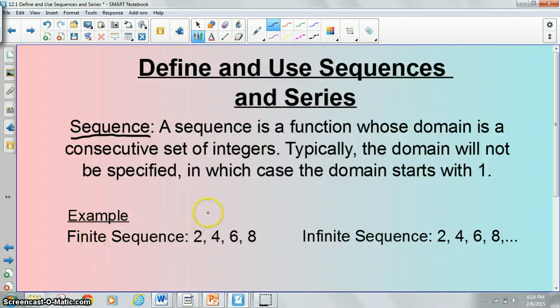In this example, if you thought about the domain, it would be 1, 2, 3, 4, but like I said, we're actually going to be concerned with the 2, 4, 6, and 8. This is a finite sequence, meaning it ends with 8. This is an infinite sequence. We use the dot, dot, dot to represent infinite sequences, just meaning it goes on forever in this pattern.